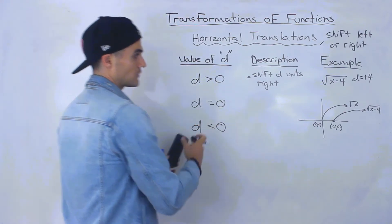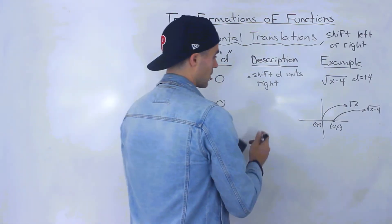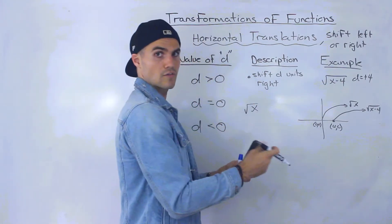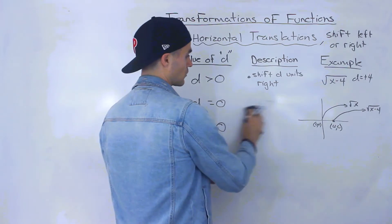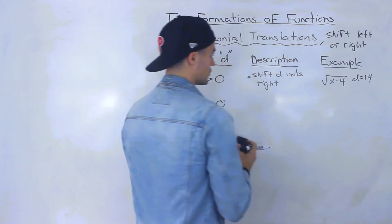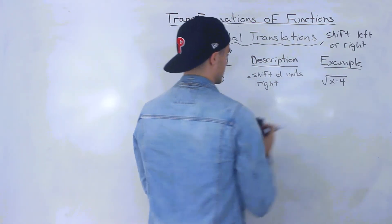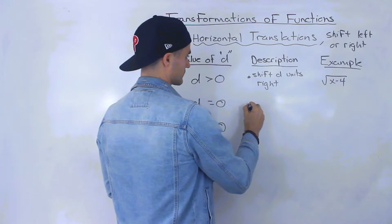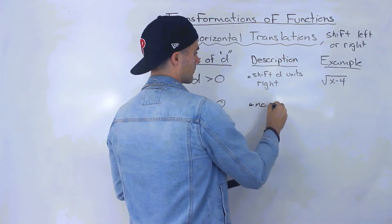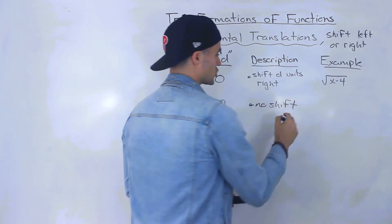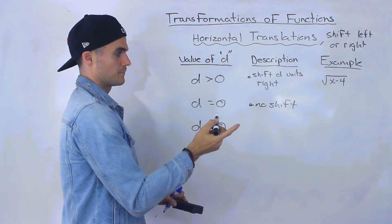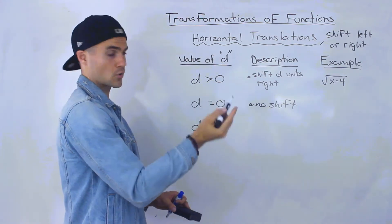Now if the d value is equal to 0, it would just stay as the square root of x — there would be no shift. There wouldn't be a shift left or right.